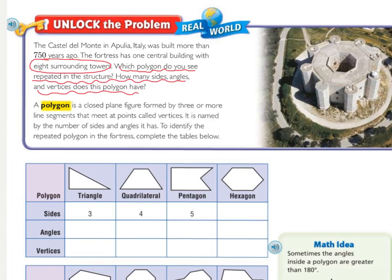So I'm asked to find two things. The first one is which polygon do I see repeated in the structure? And then the second one is how many sides, angles, and vertices does this polygon have? To answer this, we also need to know that the fortress has eight surrounding towers — so really there are eight different points, especially in this picture right here.